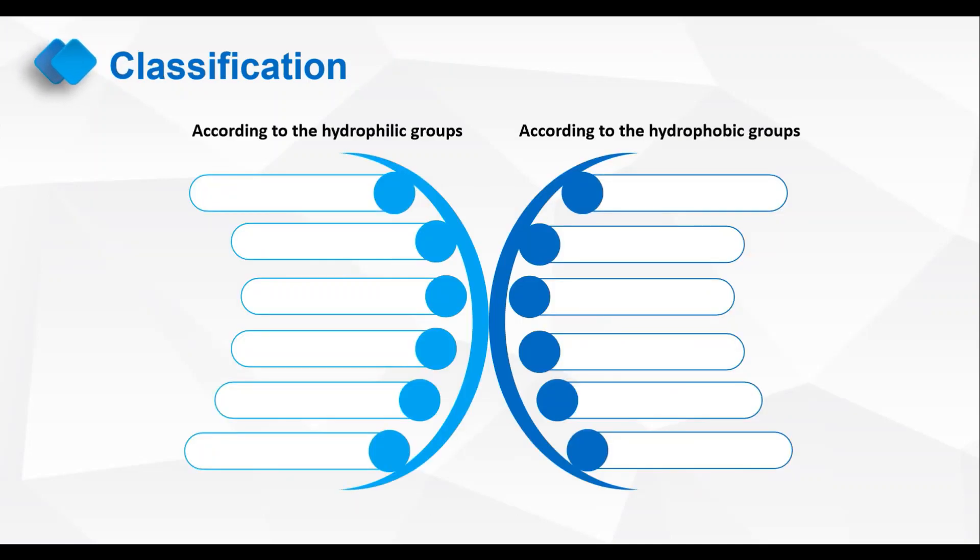According to the hydrophilic group classification, nonionic surfactants can be divided into polyoxyethylene type, poly fatty acid ester type, alkyl glycoside type, alkanolamide type, polyether type, oxidized amine type, and so on.